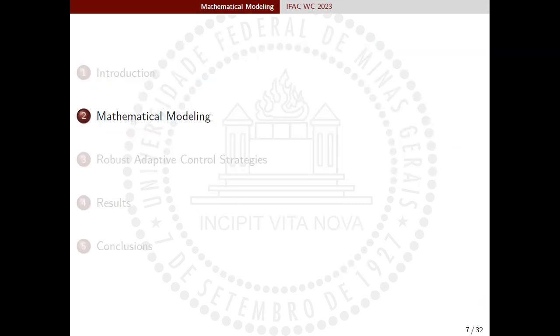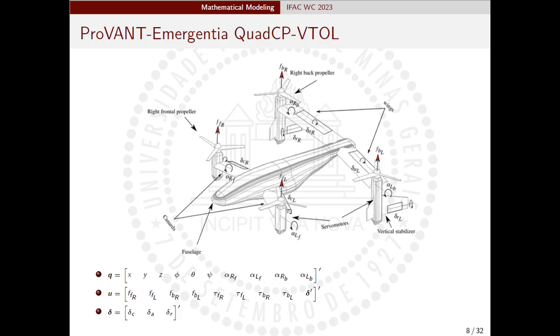Now we introduce the quad-tiltrotor UAV modeling. The quad-CP VTOL UAV is a multi-body mechanical system that is here assumed to be composed of five rigid bodies: the main body, which comprises the fuselage, canards, and wings, and four groups of thrusters, two at each side of the aircraft, with each one being composed of a propeller, a rotor, and a tilting mechanism.